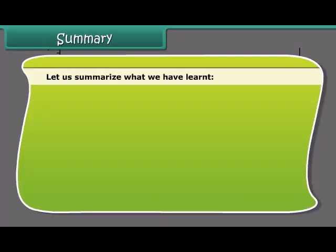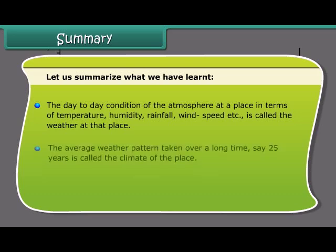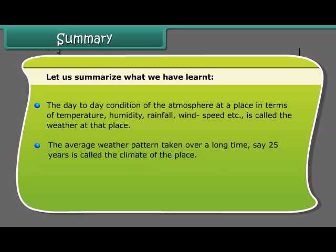Let us summarize what we have learned. The day-to-day condition of the atmosphere at a place in terms of temperature, humidity, rainfall, wind speed, etc. is called the weather at that place. The average weather pattern taken over a long time, say 25 years, is called the climate of the place.